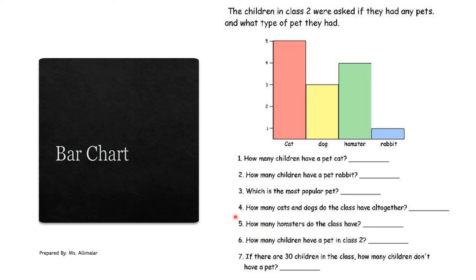Number four: how many cats and dogs does the class have altogether? Altogether means you have to add. They are talking about cats and dogs only, so: cat is five, dog is three — five plus three equals eight. Number five: how many hamsters does the class have? The class has four hamsters.